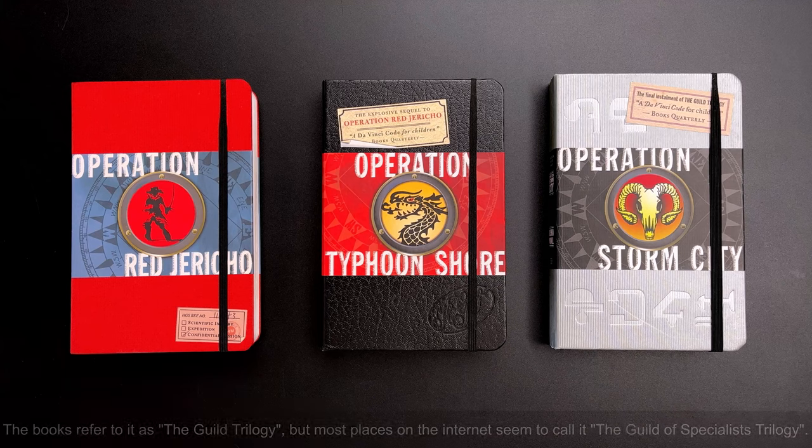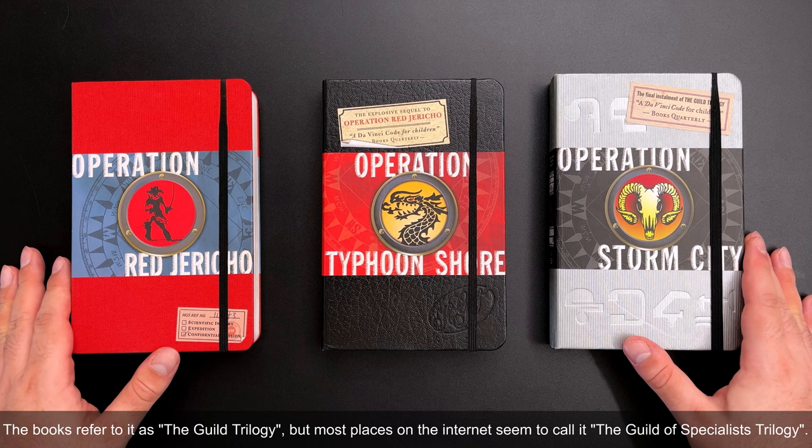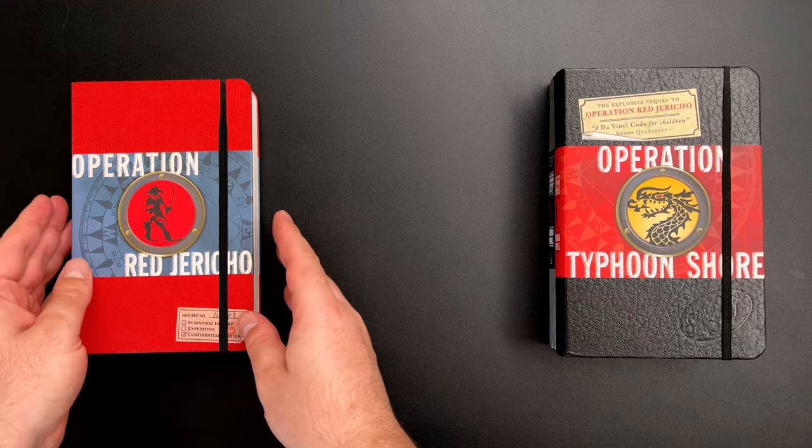This is a review of the Guild Trilogy, made up of the books Operation Red Jericho, Operation Typhoon Shaw, and Operation Storm City by Joshua Mole that came out between 2005 and 2009.